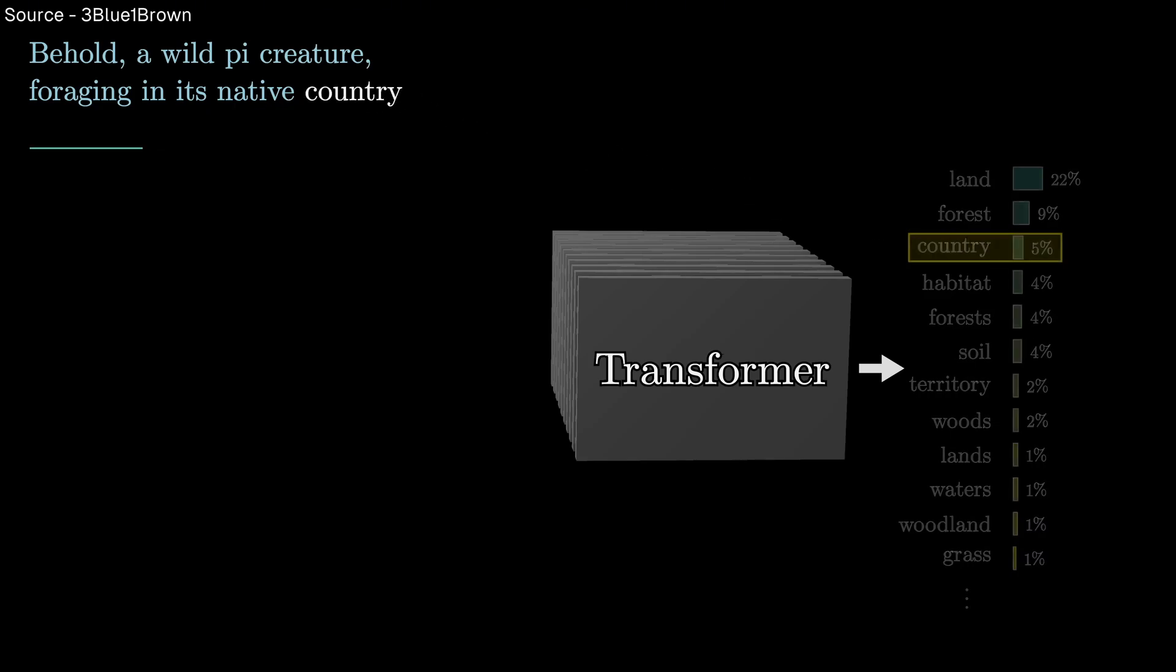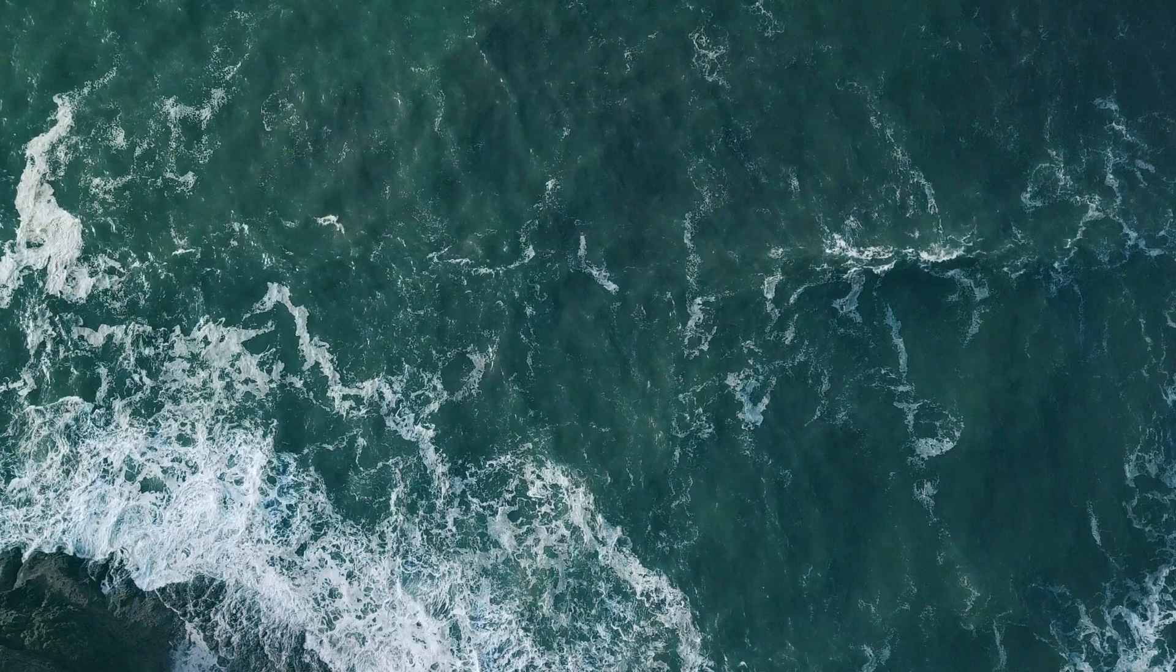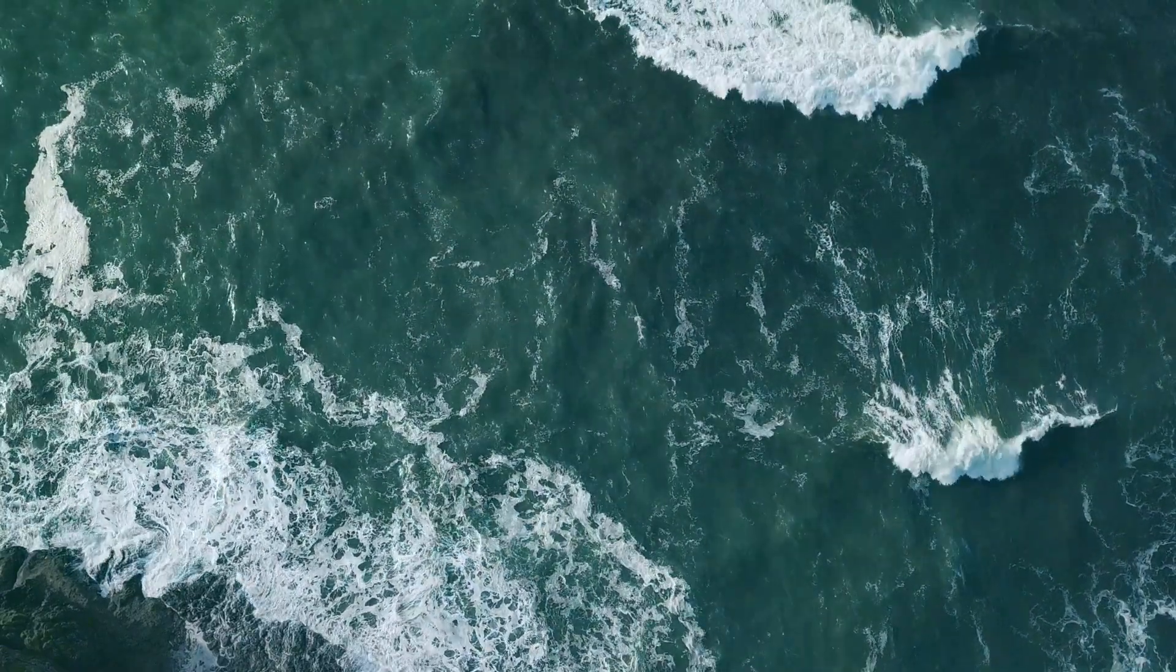This phenomenon has been called the blessing of scale, where bigger models don't just perform better, they develop new capabilities entirely. It's like crossing a threshold where quantity transforms into quality. A puddle can only reflect images, but an ocean can generate waves, support ecosystems, and influence weather patterns.